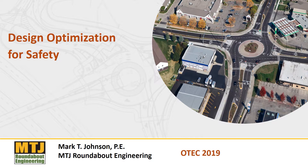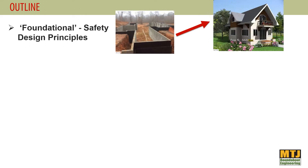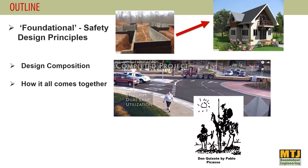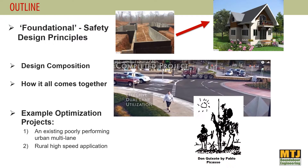Design optimization for safety. As a follow-on to the previous presentation, we'll discuss foundational safety design principles. We're going to look at design composition and how these principles need to come together as a unified whole to maximize safety and performance, and examine two design optimization projects: an existing poorly performing urban multi-lane in Ohio, and a rural high-speed application which was a peer review done at the request of Ohio DOT.